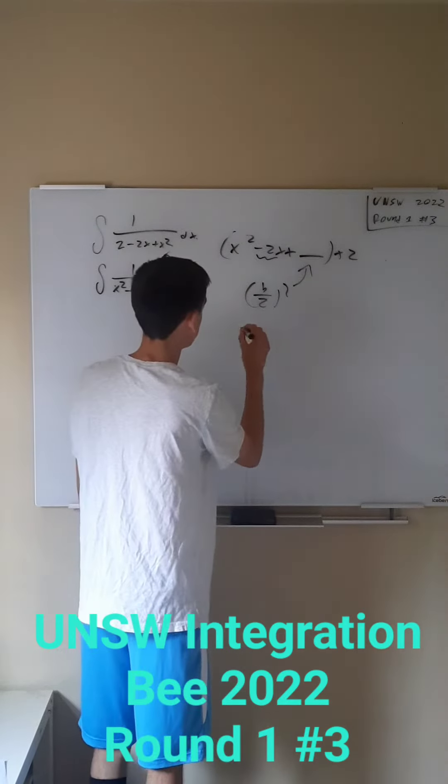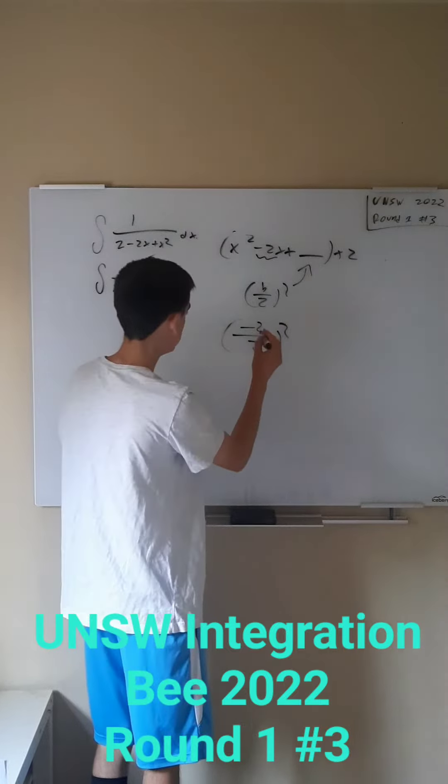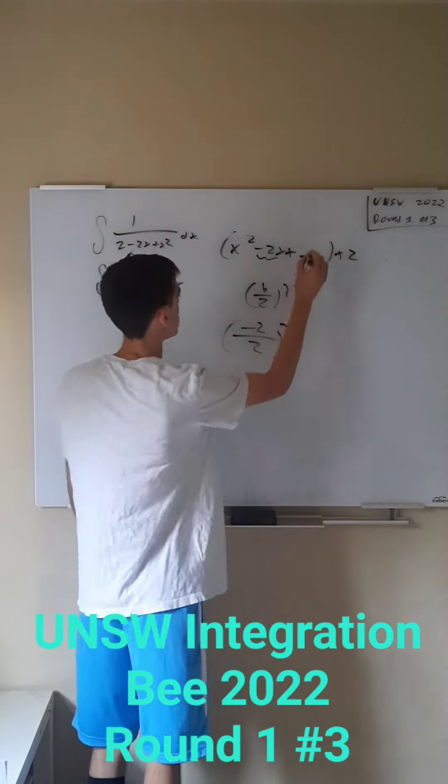In our equation we have negative 2 as the b term so we're going to divide that by 2 and square. Negative 2 divided by 2 is just negative 1, negative 1 squared is 1 so this will be 1.